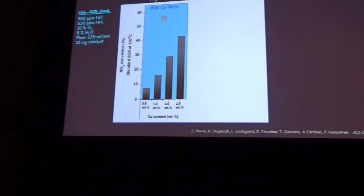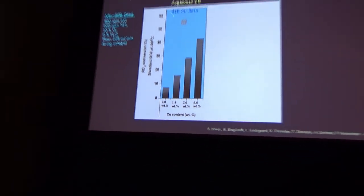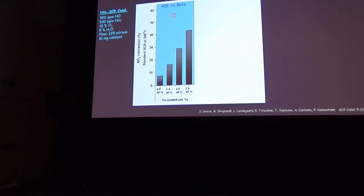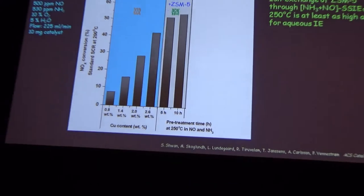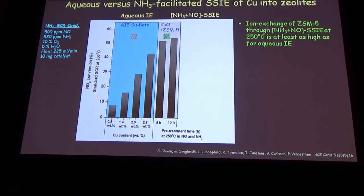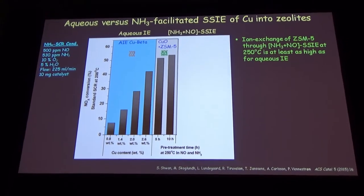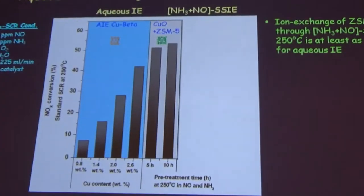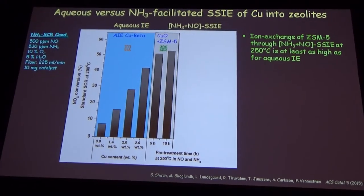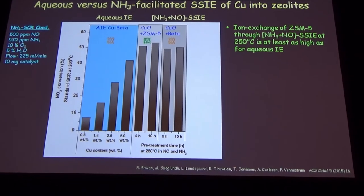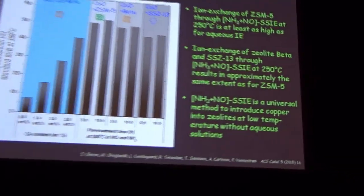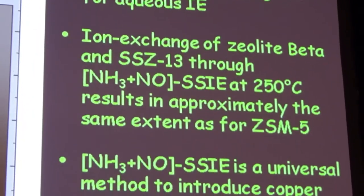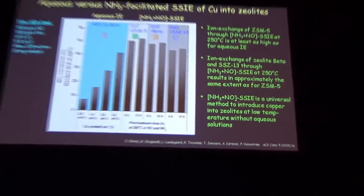Comparing solid-state ion exchange with aqueous ion exchange: aqueous ion exchange copper beta samples at different copper loadings (0.1 to 0.8) show a gradual increase in SCR activity with increasing copper loading. Comparing with solid-state ion exchange using ammonia and NO—the best combination—after 5 hours and 10 hours we have at least as high activity as compared to the aqueous ion-exchanged zeolite. This is true also for zeolite beta and copper, and for SSZ-13 and copper oxide. We can interpret this solid-state ion exchange facilitated by ammonia and NO as a universal method to introduce copper into zeolites at low temperatures.